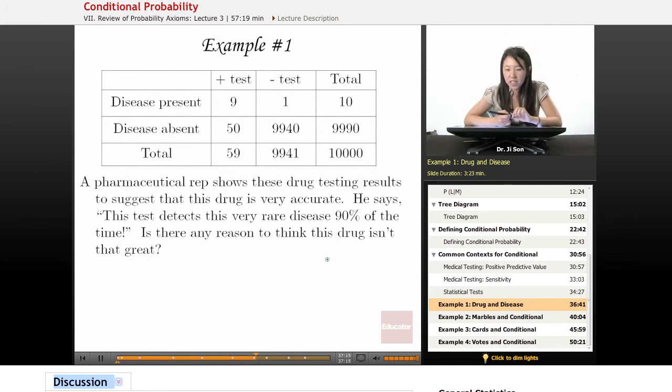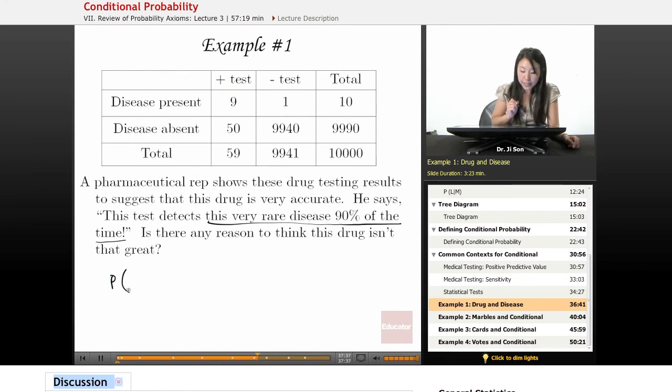Well, when he says it detects this disease 90% of the time, is he saying nine out of the 10,000 people who took the test? No. He's really talking about nine out of the 10 people. So when he says 90%, he's really saying the probability of a positive test, given that they have the disease.